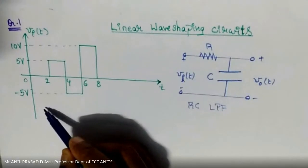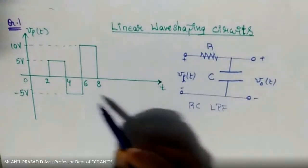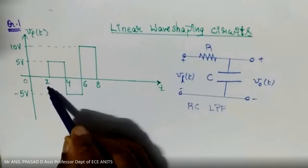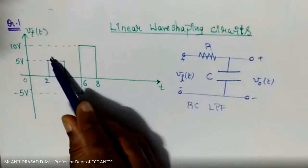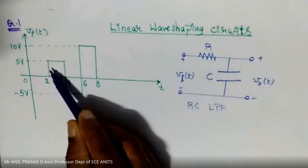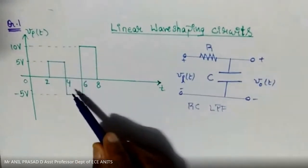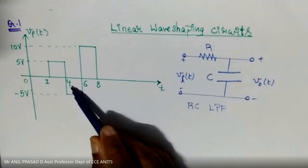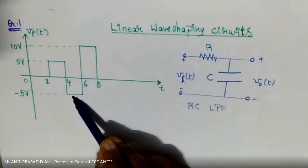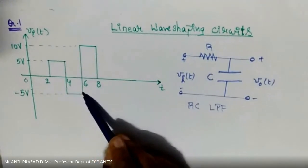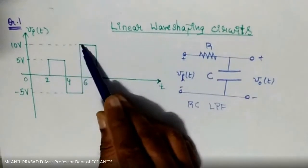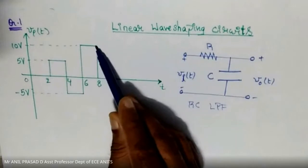Understand the input carefully — the input is varying with respect to time. When the input is between zero to two seconds, the input is zero. At t=2, the input suddenly changes from zero volts to five volts, and it remains at five volts until t=4. At t=4 seconds, the input changes from plus five volts to minus five volts, continuing until t=6 seconds. At t=6, the input changes to ten volts, continuing until t=8 seconds.